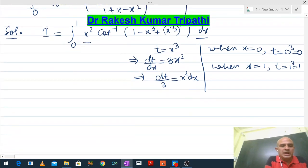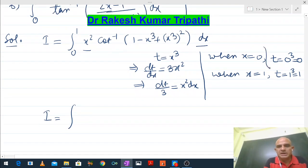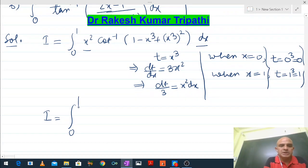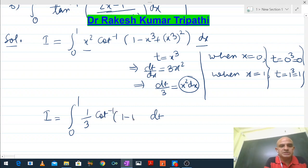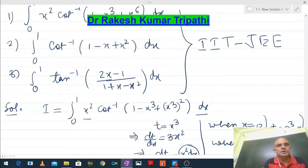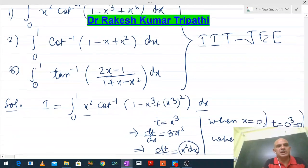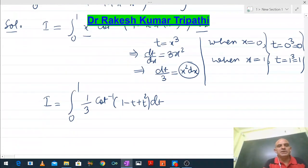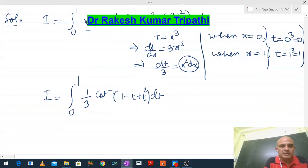The integral reduces to I = (1/3) ∫₀¹ cot⁻¹(1 - t + t²) dt. You can see this has become similar to question number 2, which is ∫₀¹ cot⁻¹(1 - x + x²) dx with limits 0 to 1. Except for the factor 1/3, everything is the same. And since definite integrals are independent of the variable, whether it is t or x, the answer remains the same.